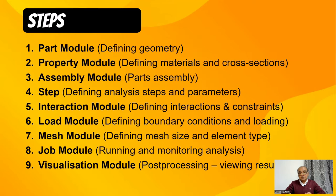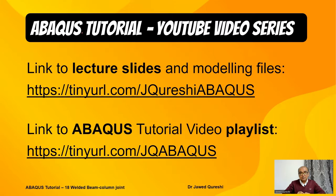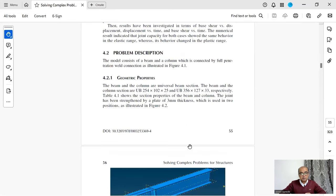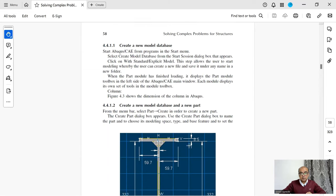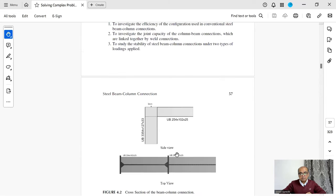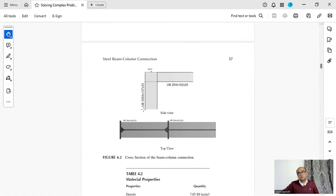I'll be using nine steps to model the problem in Abaqus. The link to all lecture slides is available at tinyurl.com/jqureshiabaqus — feel free to download these files. I will also link the chapter from the book for a step-by-step process, but please be mindful of the typos: for example, it should be 356 not 354, and UB356 not UB254.